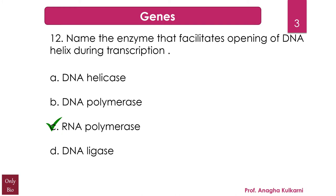RNA polymerase is an enzyme that synthesizes RNA from a DNA template. Using helicase activity, RNA polymerase locally opens the double-stranded DNA so that one strand of the exposed nucleotides can be used as a template for RNA synthesis — this is the transcription process. DNA ligase, as the term suggests, helps in stitching by catalyzing the formation of a phosphodiester bond and repairing single-stranded breaks in the duplexed DNA in all living organisms.